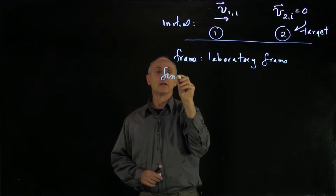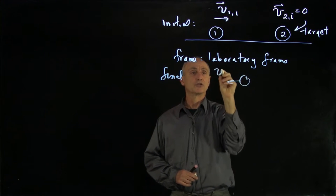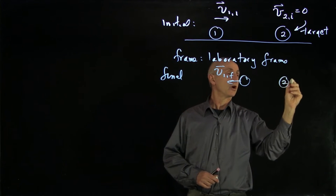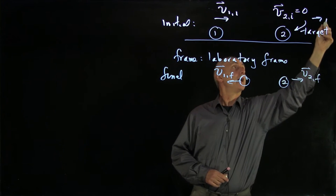Then in our final state, both the target and the particles can be moving. We'll indicate v1 final and the target is also moving with v2 final. We have i hat.